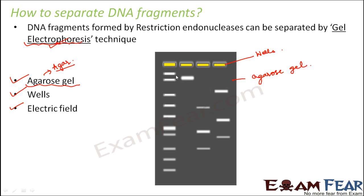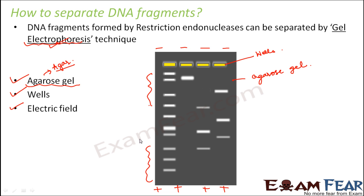An electric field is applied so that the fragments can move under its influence. When the electric field is applied, one side becomes positive and the other negative. The DNA fragments tend to move towards the positive pole because DNA is negatively charged. The heavier fragments move slower whereas the lighter fragments move faster. The lighter fragments tend to move more and end up on the far side, while the heavier fragments remain closer. Smaller the fragment, farther it moves — that is how DNA fragments are separated.